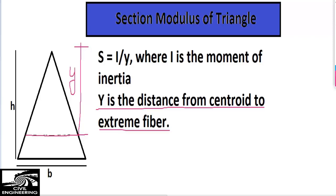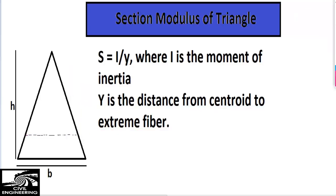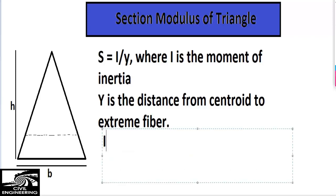So how we will put all these values into the main formula. First, we are interested in the moment of inertia of the triangle. The moment of inertia is known to us: I is equal to BH³ divided by 36. This is the moment of inertia for a triangle.